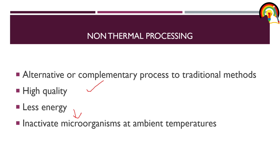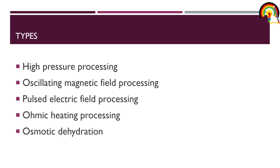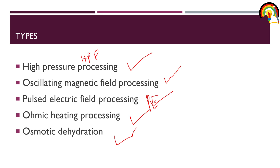There are different types of non-thermal processing. The first is high pressure processing (HPP), the second is oscillating magnetic field processing (OMF), the third is pulsed electric field processing (PEF), the fourth is ohmic heating processing, and the fifth is osmotic dehydration. Just learn the acronyms of all these so you won't be confused in exams.